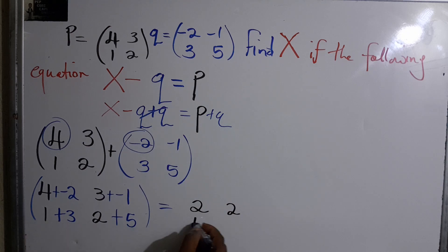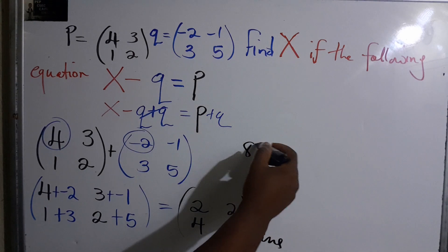And 2 plus 5 is 7. So it's that easy guys. The final answer is (2, 2; 4, 7).